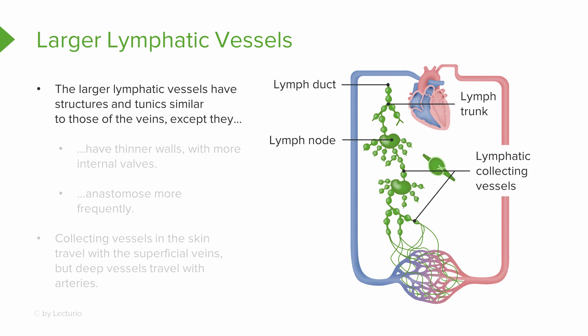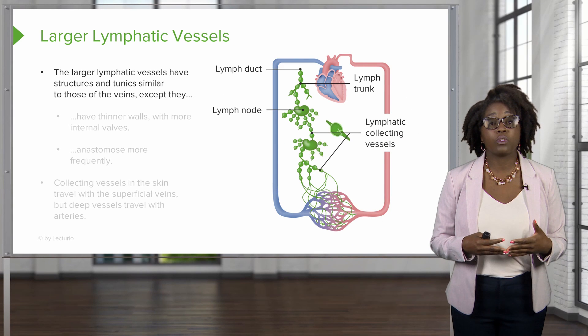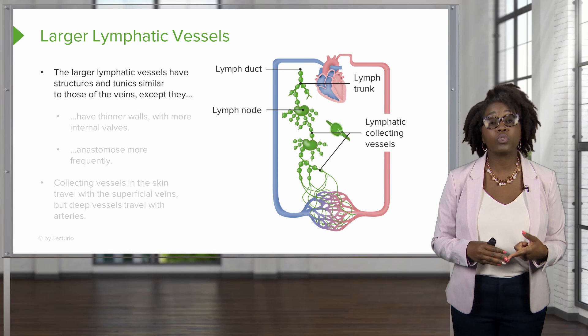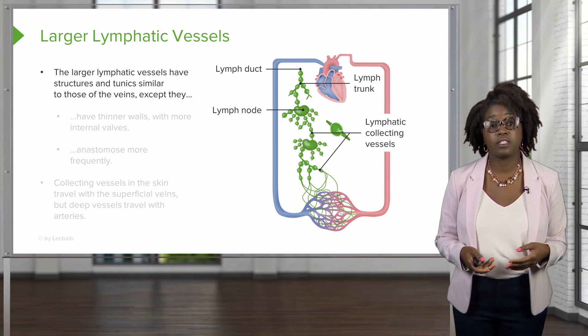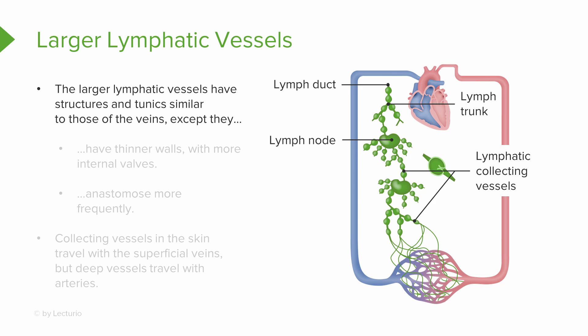The lymph capillaries are going to drain into increasingly large vessels called collecting lymphatic vessels. These vessels consist of collecting vessels, trunks, and ducts. These vessels also have structures and tunics that are very similar to that of veins, except that these are going to have much thinner walls and more valves.